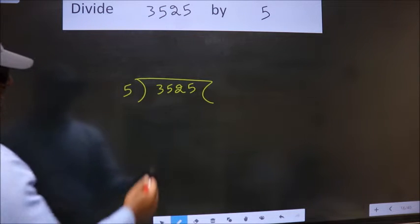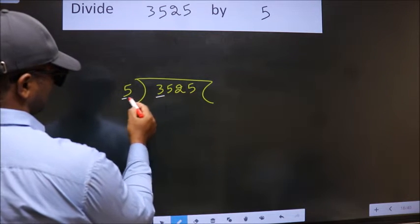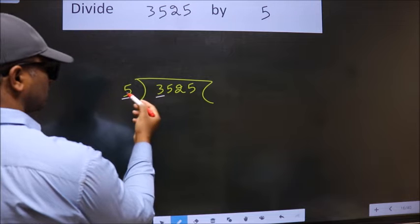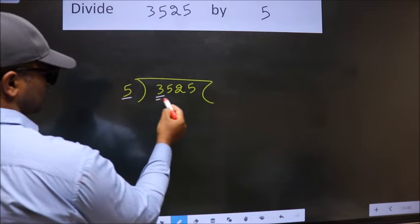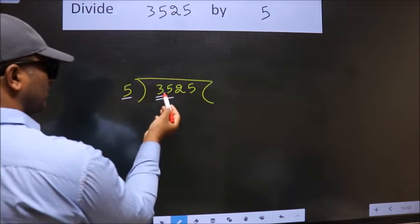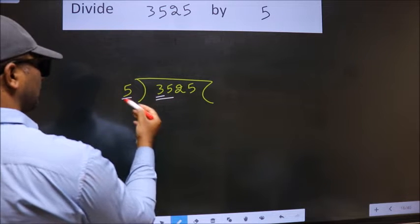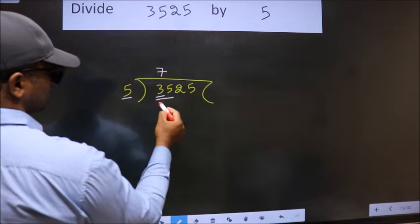This is your step 1. Next, here we have 3, here 5. 3 is smaller than 5. So, we should take two numbers 35. When do we get 35 in 5 table? 5 7s, 35.